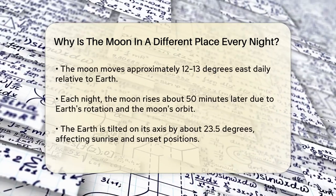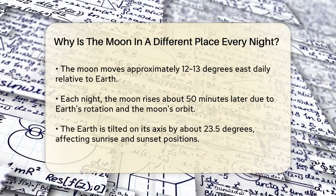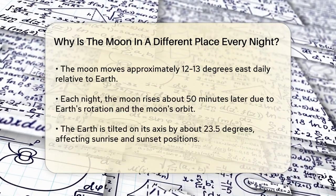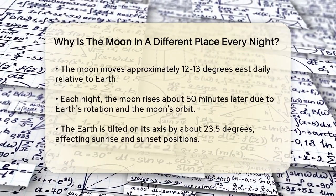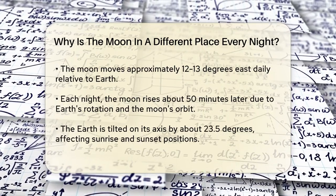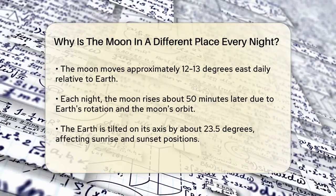Another important factor is the tilt and orbit of the Earth around the Sun. The Earth is tilted on its axis by about 23.5 degrees relative to its orbit around the Sun. This tilt causes the positions of sunrise and sunset to change throughout the year.